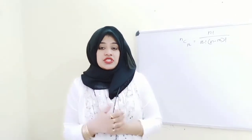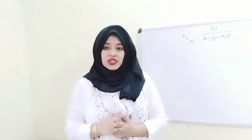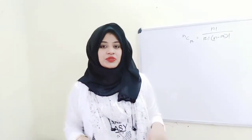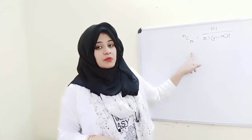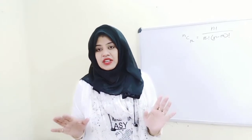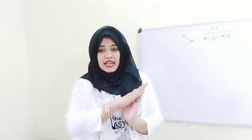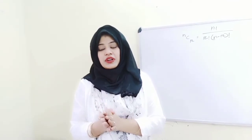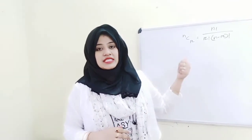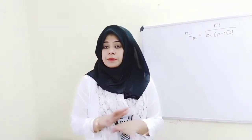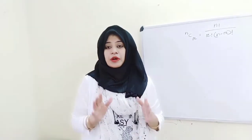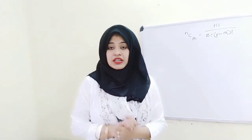The trick I am going to give you means you don't need to use the formula to solve combination problems. That formula is nCr = n factorial divided by r factorial times (n minus r) factorial. Just apply the trick — you won't need to use this formula or a calculator.